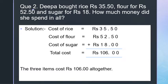Look at the solution. Cost of rice is Rs. 35.50, cost of flour is Rs. 52.50, and cost of sugar is Rs. 18. We have to find how much money she spent in all, so we have to add these 3 quantities.